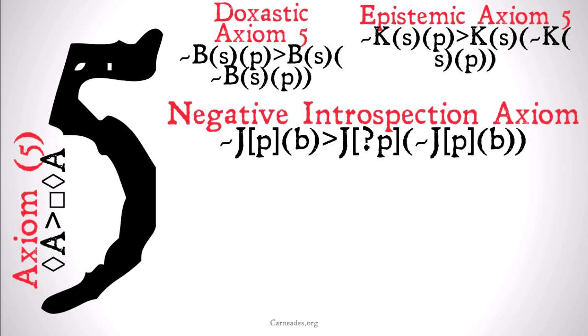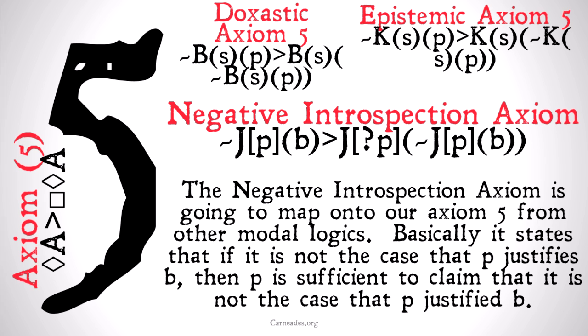For justification logic, we're also going to have a version of axiom 5. It's going to look like the negative introspection axiom. The negative introspection axiom maps onto axiom 5 from our other modal logics. It states that if it is not the case that P justifies B, then P is sufficient to claim that it is not the case that P justified B.